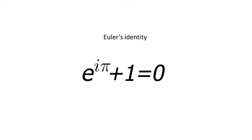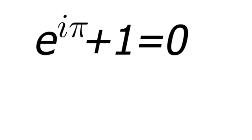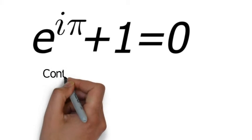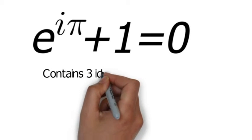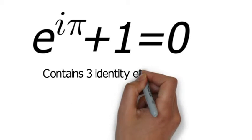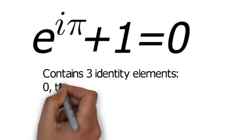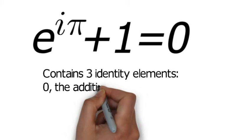And the reason it's so damn beautiful is that it contains 0, which is the additive identity element. In other words, 0 does not change the result of addition. 1, the identity element of multiplication.